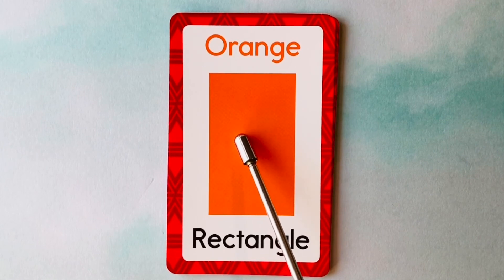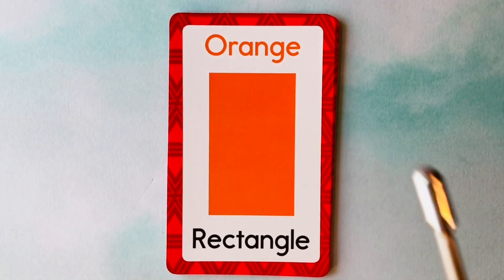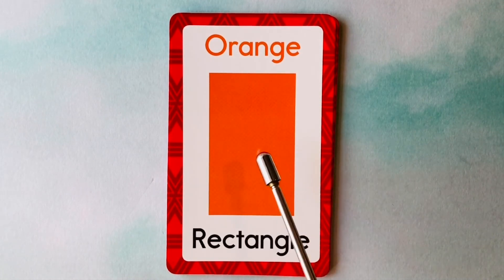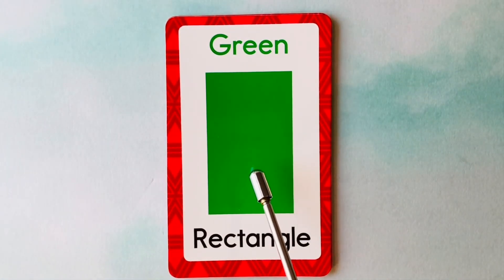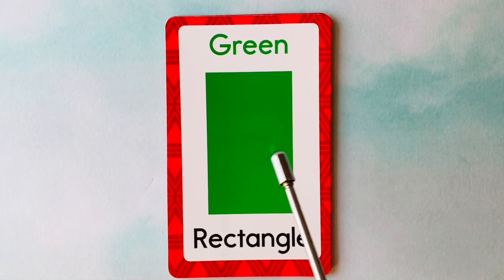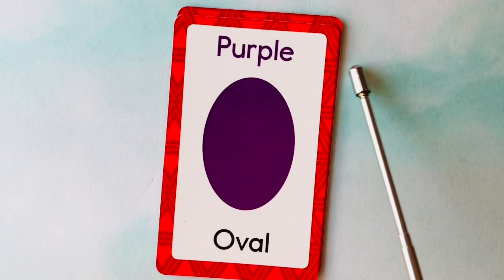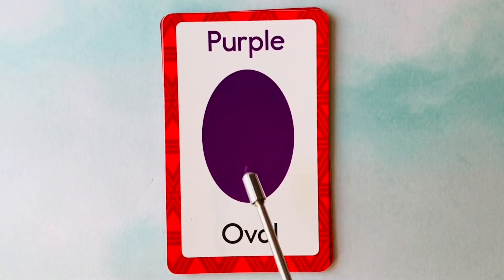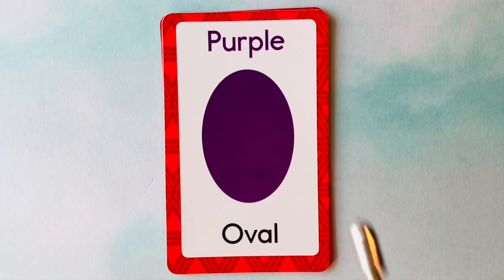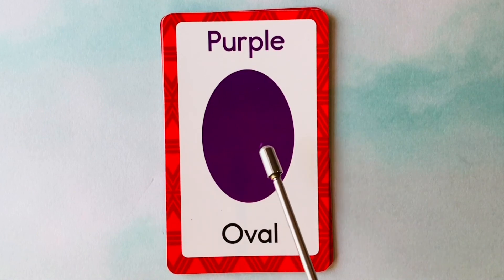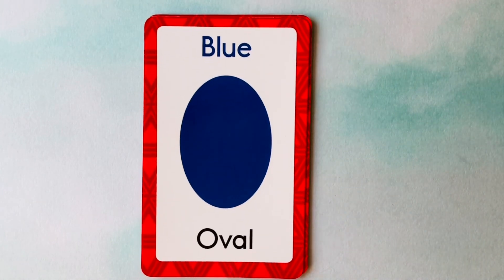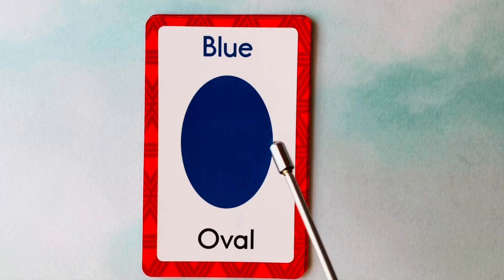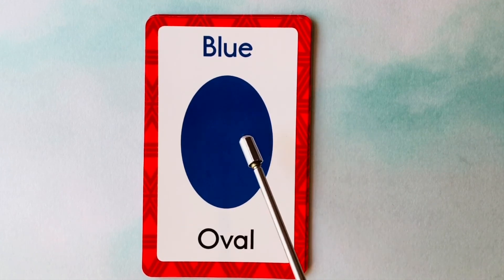This is a rectangle. What color is this rectangle? It's an orange rectangle. This is an orange rectangle. This is also a rectangle. What color is this rectangle? It's a green rectangle. This is a green rectangle. This is an oval. What color is this oval? It's a purple oval. This is a purple oval. This is also an oval. What color is this oval? It's a blue oval. This is a blue oval.